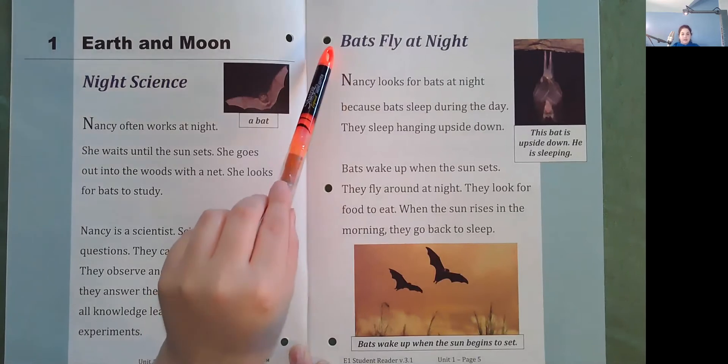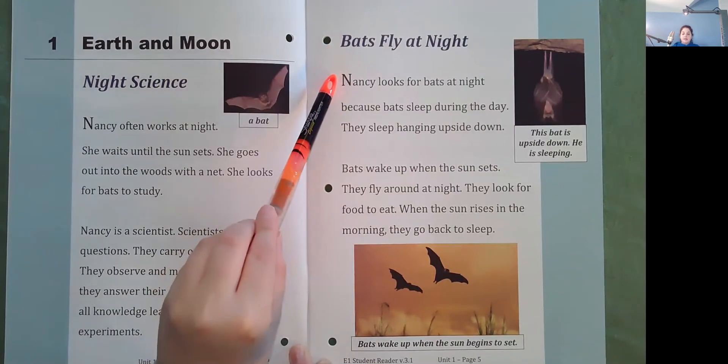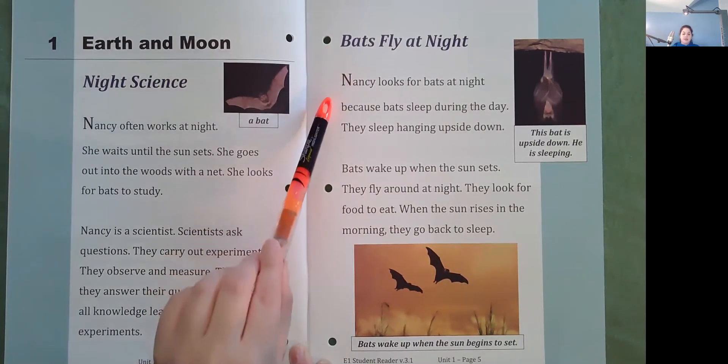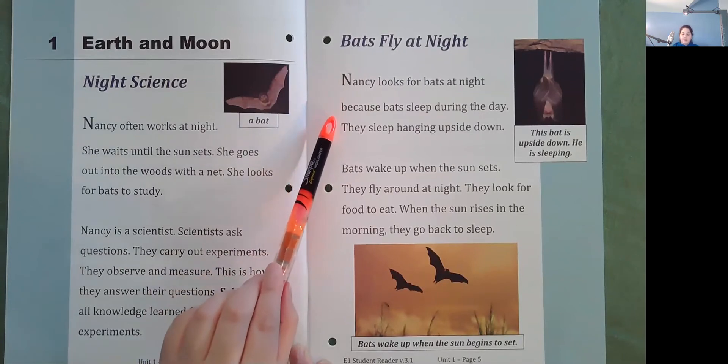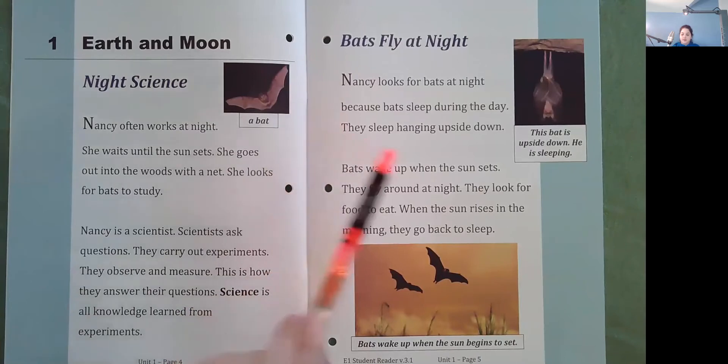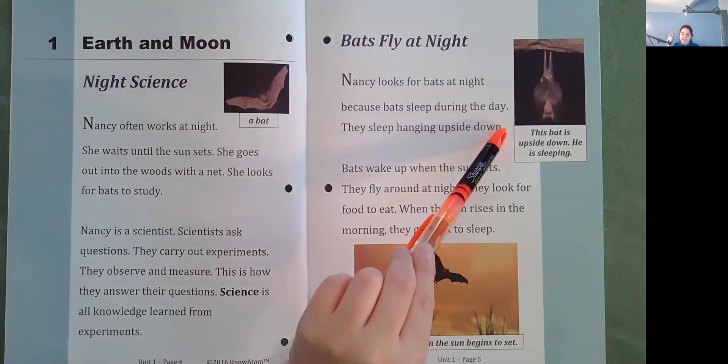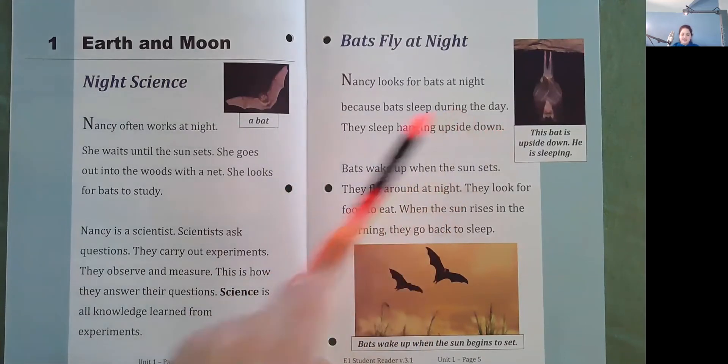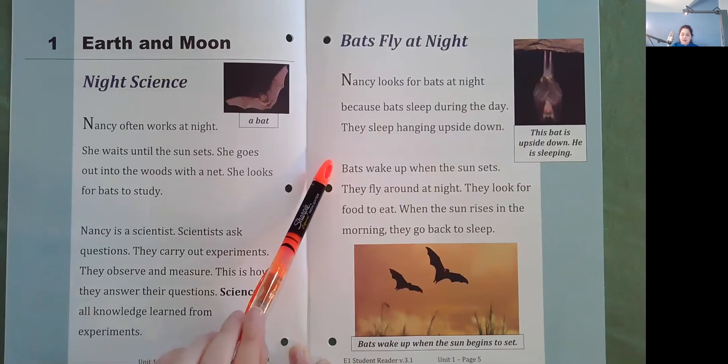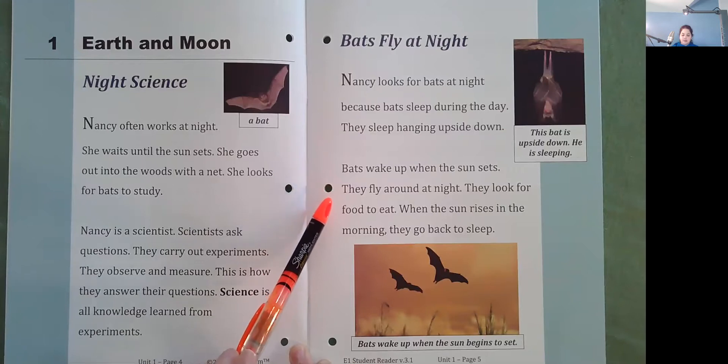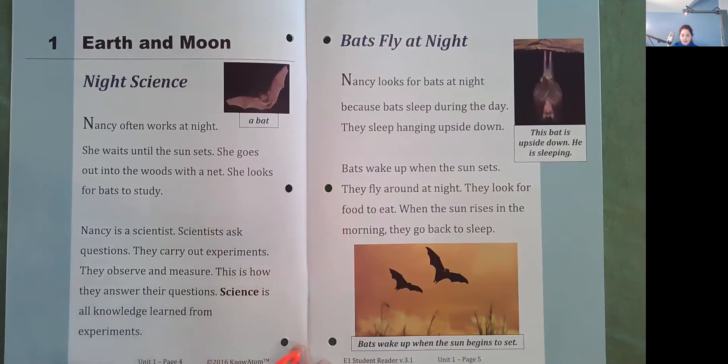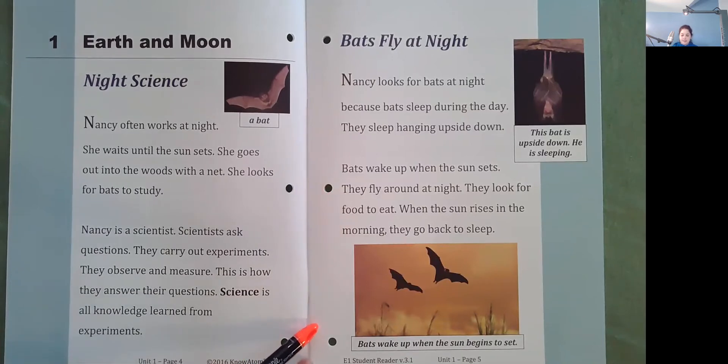Bats fly at night. Nancy looks for bats at night because bats sleep during the day. They sleep hanging upside down. So here is a bat upside down sleeping. Bats wake up when the sun sets. They fly around at night. They look for food to eat. When the sun rises in the morning, they go back to sleep. So bats wake up when the sun begins to set.